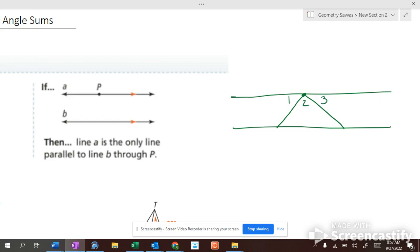Angles 1, 2, and 3 add up to how much? If these lines are parallel, what do we know about angles 1 and 4? They're alternate interior angles, so they are congruent. 1 and 4 are congruent.